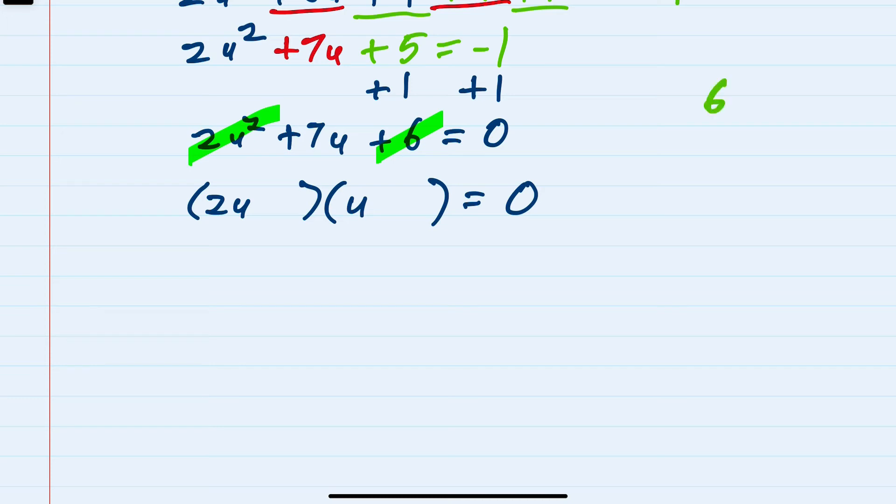When I plug those in, everything's positive. And if I put the 2 here and the 3 here, that would check to being 3u and 4u on the outer and inner to give us that 7u. So we've factored correctly.